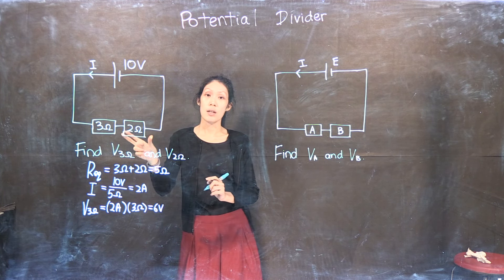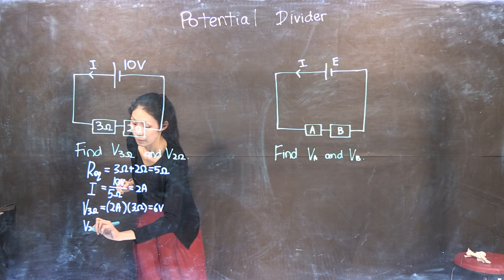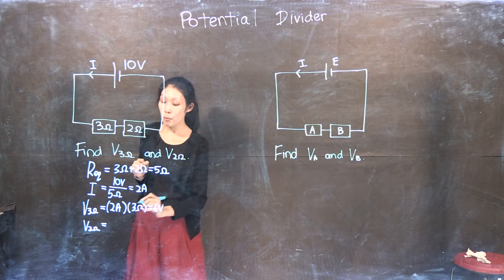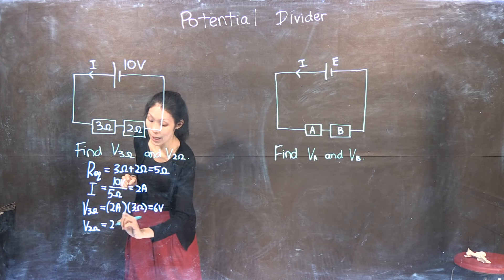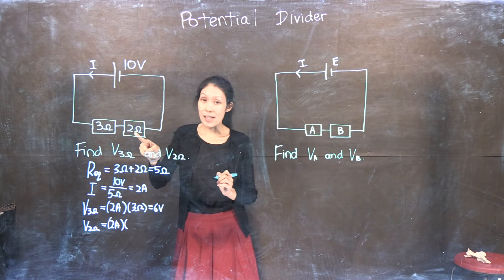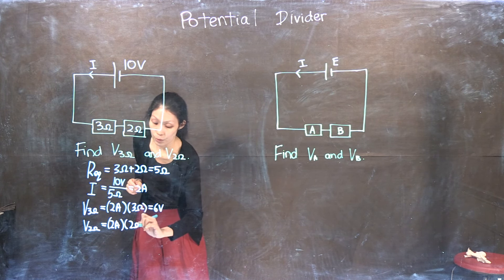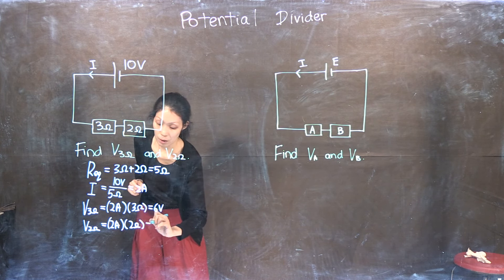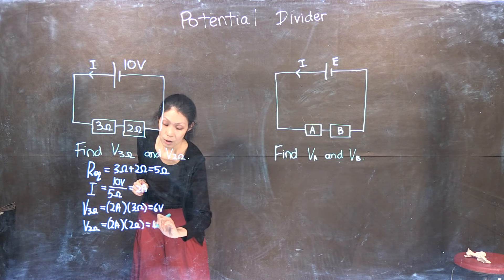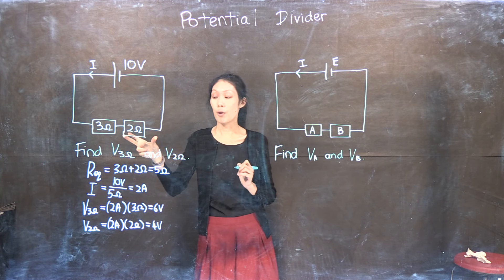Now let's find the potential difference across my two ohms resistor. The current through my two ohms resistor is two amperes, and this resistor has a resistance of two ohms, so the potential difference across this is four volts.